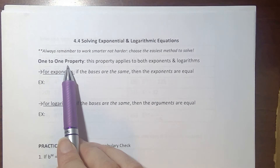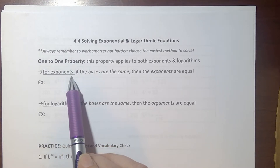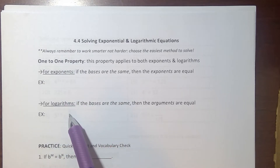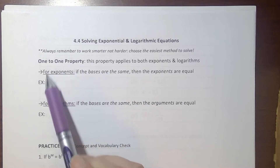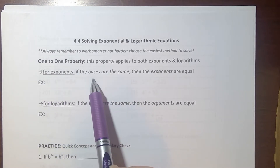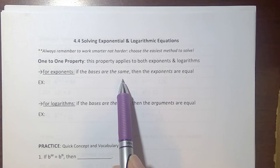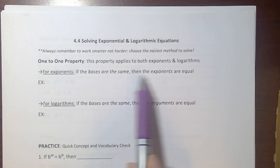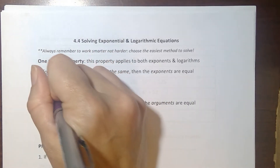The one-to-one property is one of those more direct pathways. It can be applied for both exponents and logarithms. For exponents, the one-to-one property tells me that if the bases are the same, then I can know that my exponents are equal.